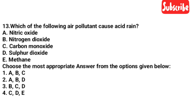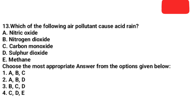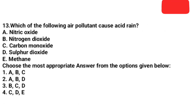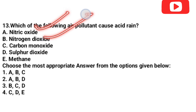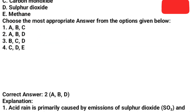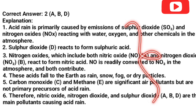Next question: Which of the following air pollutants cause acid rain? Options: nitric oxide, nitrogen dioxide, carbon monoxide, sulfur dioxide, and methane. The answer is option number 2 — A, B, and D: nitric oxide, nitrogen dioxide, and methane are the causes of acid rain. Carbon monoxide and sulfur dioxide are not the correct answers here.